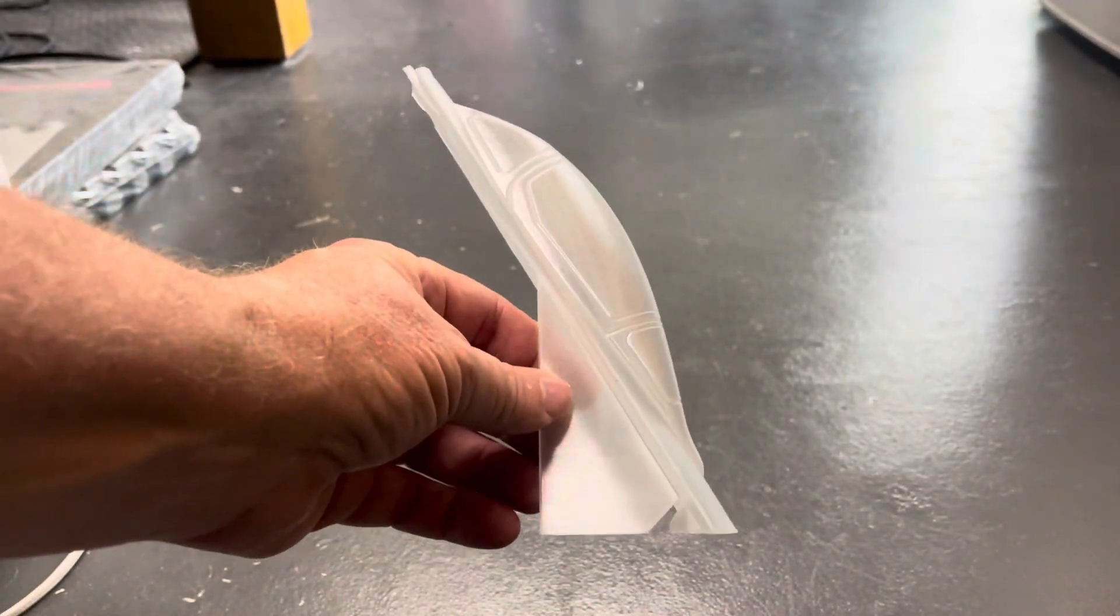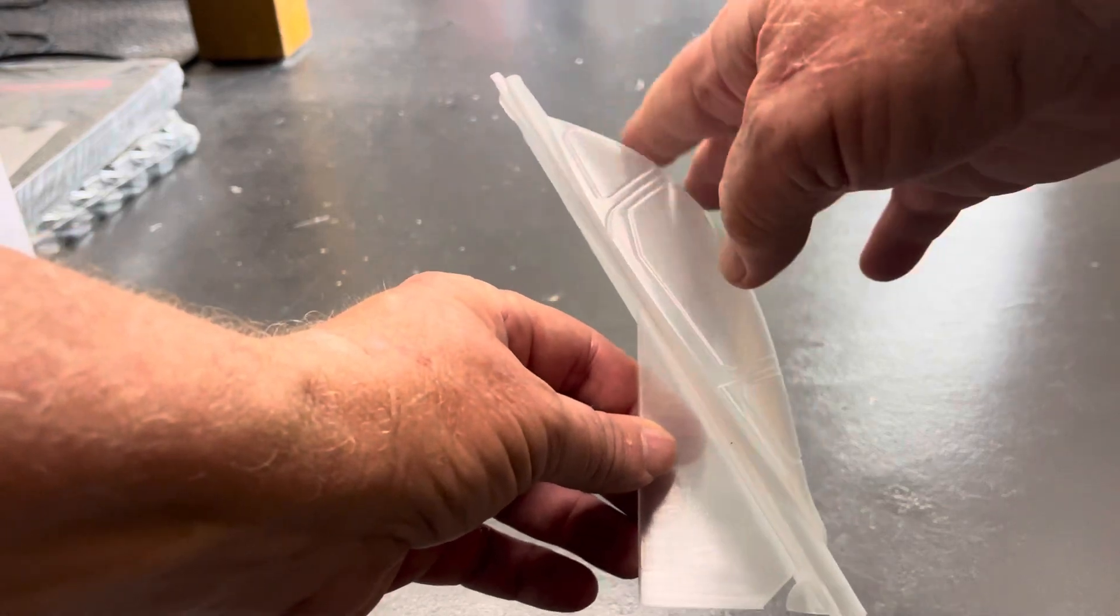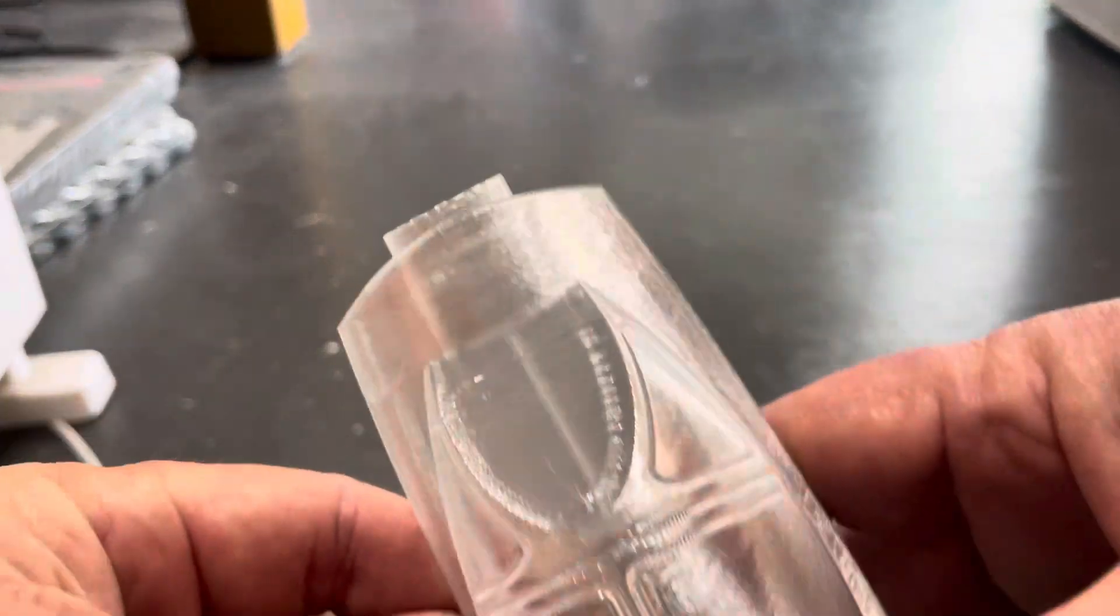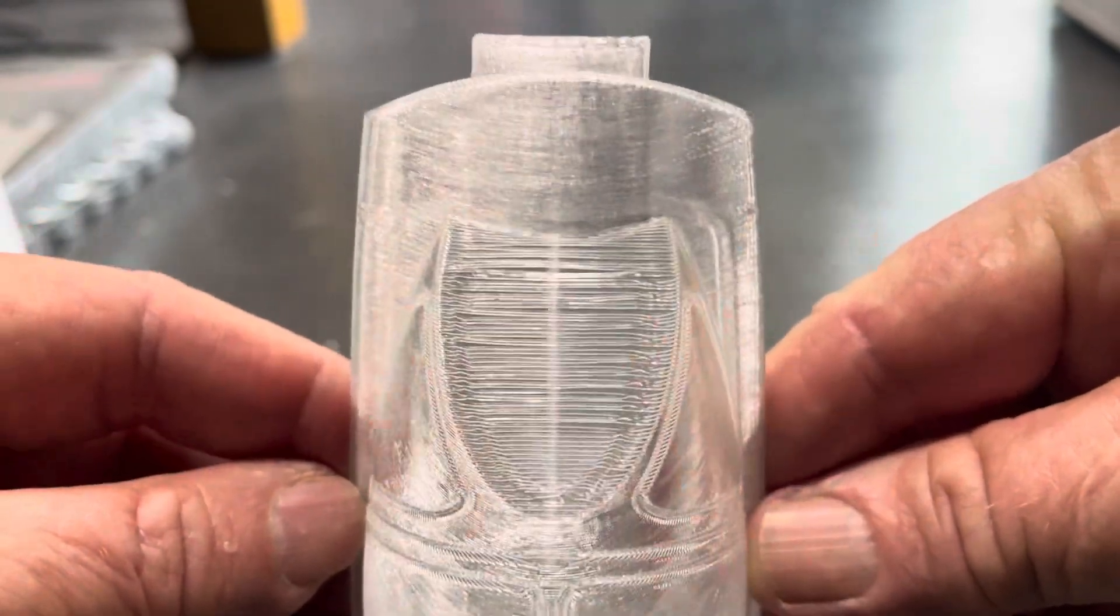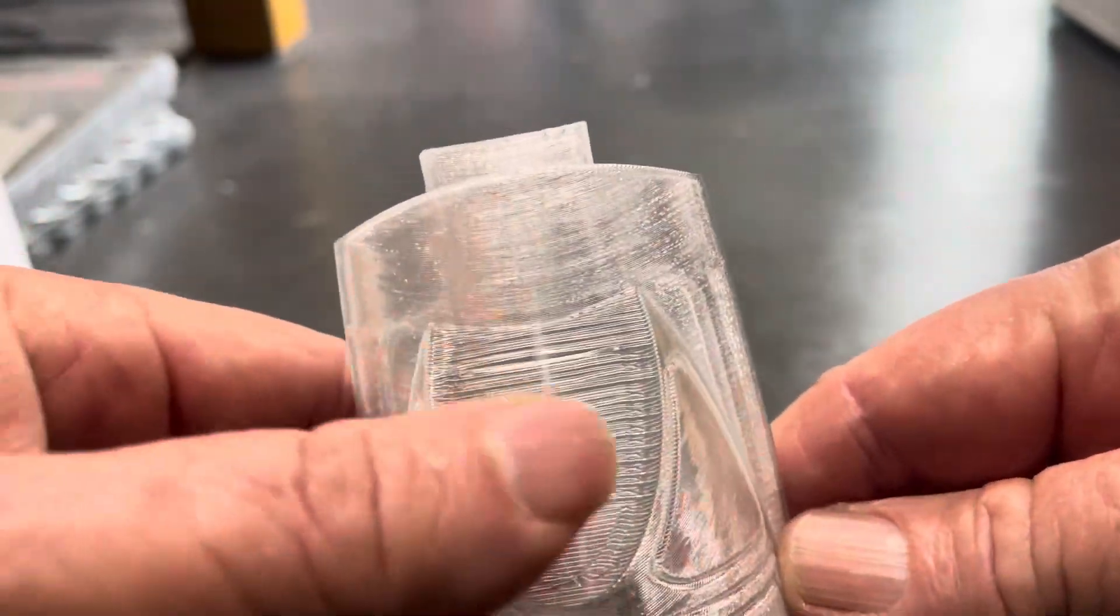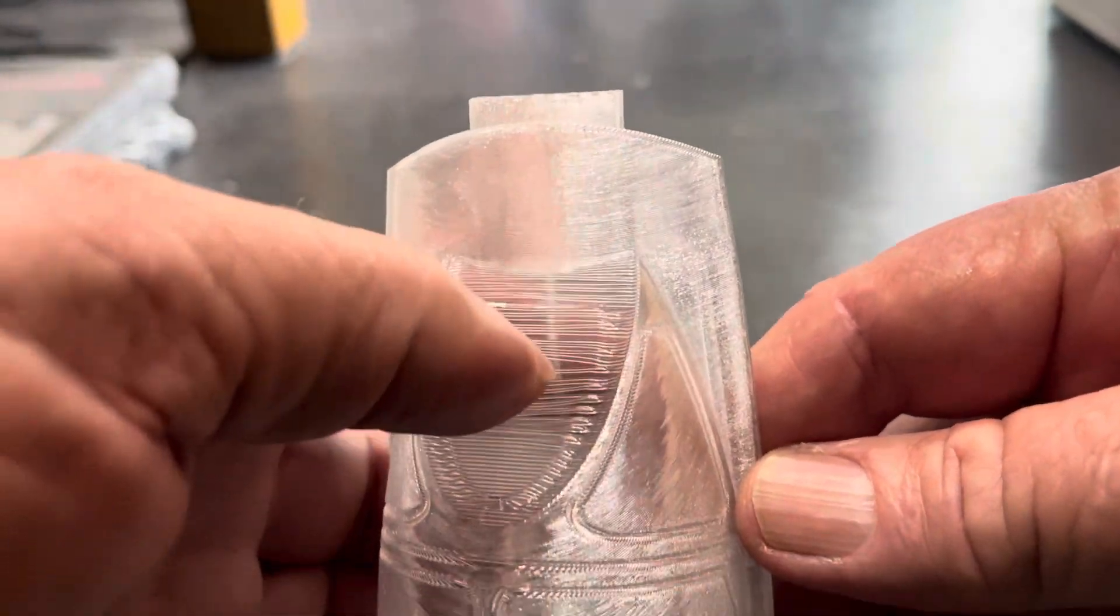But anyway, bottom line is when it prints like that, it leaves the windscreen pretty horizontal, and because of that this didn't work so well. You could stick your finger through it, sort of stuff.